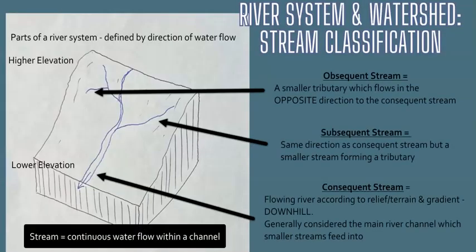A watershed is a river system. The main river is called the consequent stream — the primary stream that flows with the majority of the water collected from the watershed down to lower elevation. Smaller streams that feed into it are called subsequent streams. There is also a stream that flows in the opposite direction based on relief and landscape, forming a confluence where it meets the main river — this is called an obsequent stream. A stream that forms later at a lower elevation is called a resequent stream. The main ones are consequent, subsequent, and occasionally obsequent, based on direction of flow.